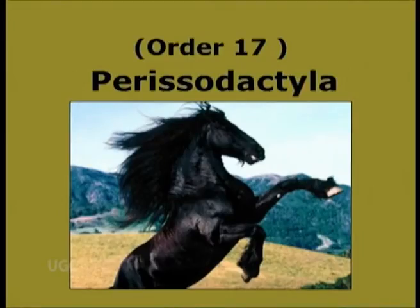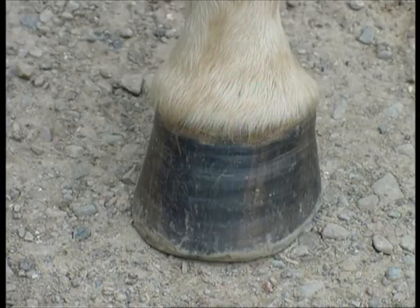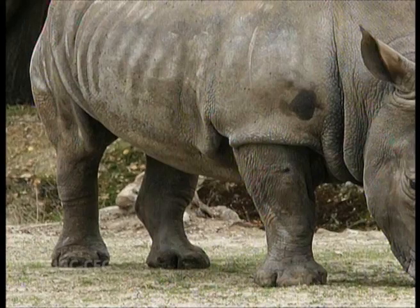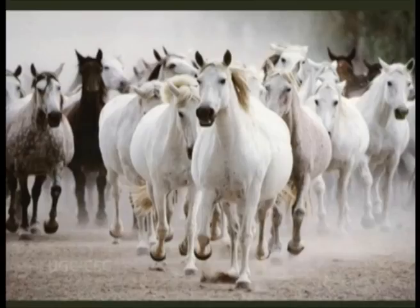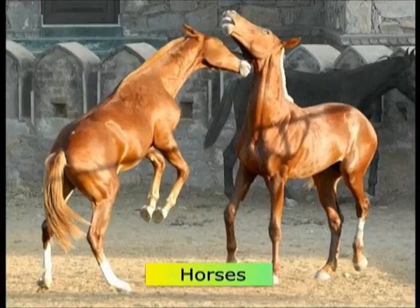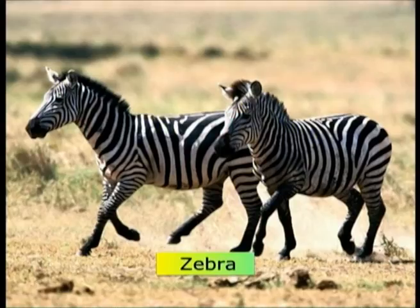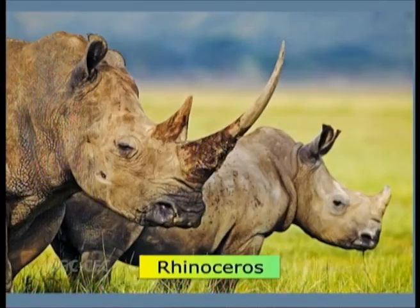Order 17: Perissodactyla. Perissos meaning odd, dactylos meaning toes — odd-toed hoofed mammals or ungulates having an odd number of toes, one or three. Functional axis of the foot passes through the middle or third digit. Incisors are present in both jaws and stomach is very simple. Examples are horses, wild ass, zebra, tapir, rhinoceros, etc.